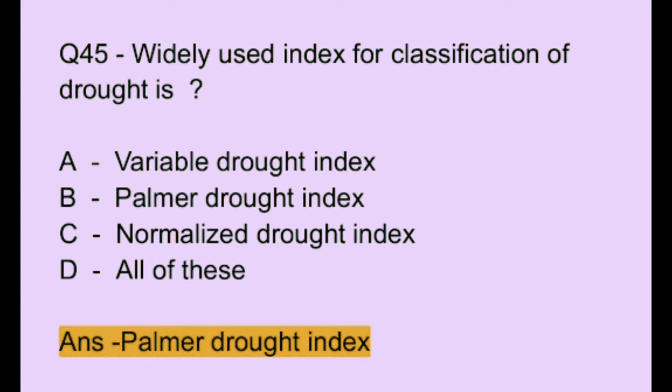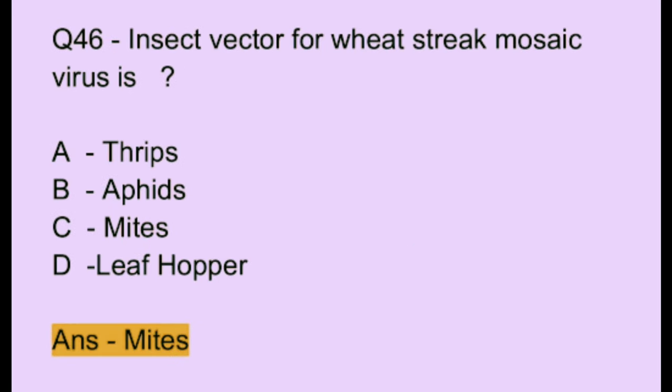Question number 45. The correct answer is option B, which is the Palmer Drought Index.